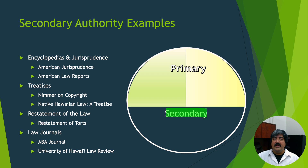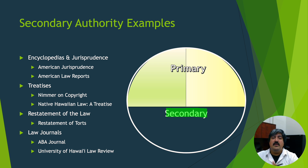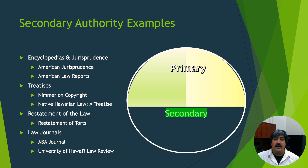Examples of secondary authority include: for encyclopedias and jurisprudence, the American Jurisprudence series and American Law Reports; for treatises, works on copyright and Native Hawaiian law — notice how these secondary sources are hyper-focused on particular areas. For restatements of the law, an example is the Restatement of Torts, which you'll likely hear more about in your torts class. And for law journals, examples include the ABA Journal and the University of Hawaii Law Review.